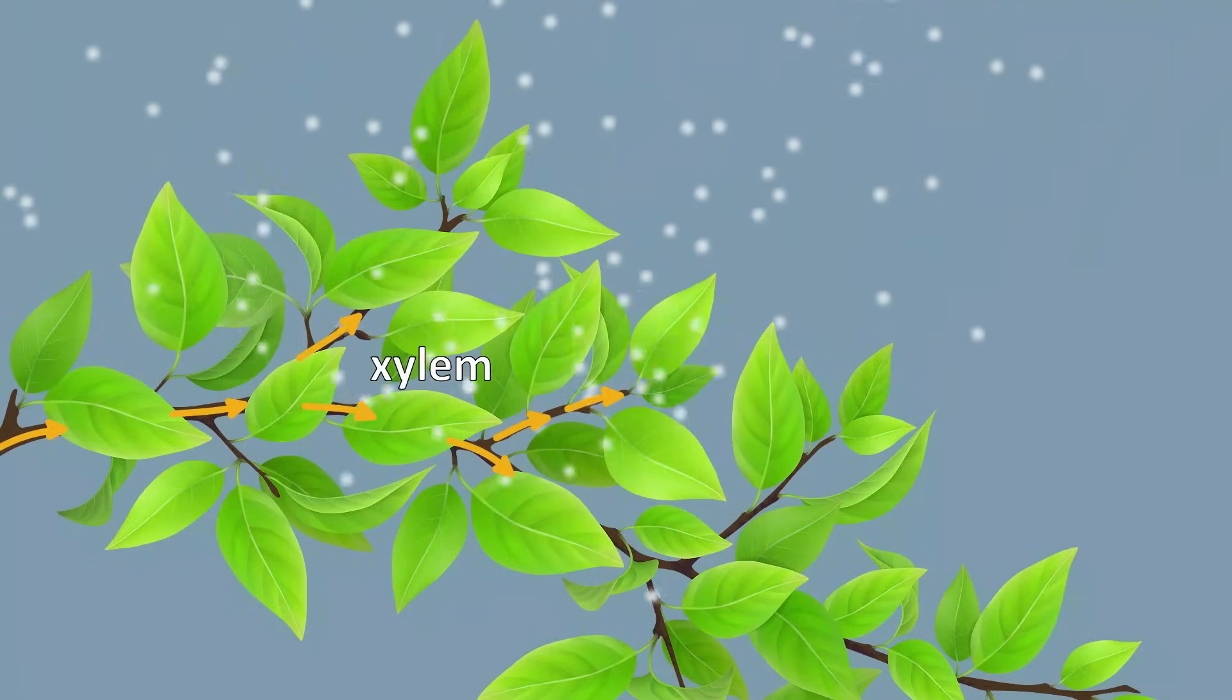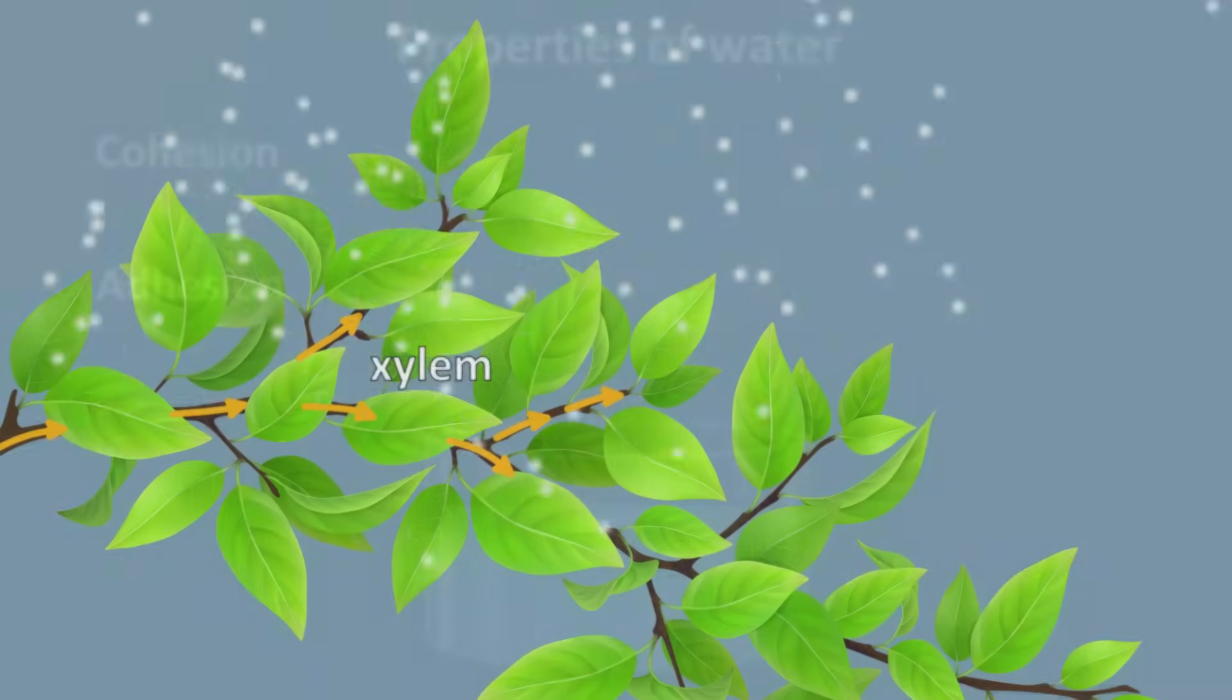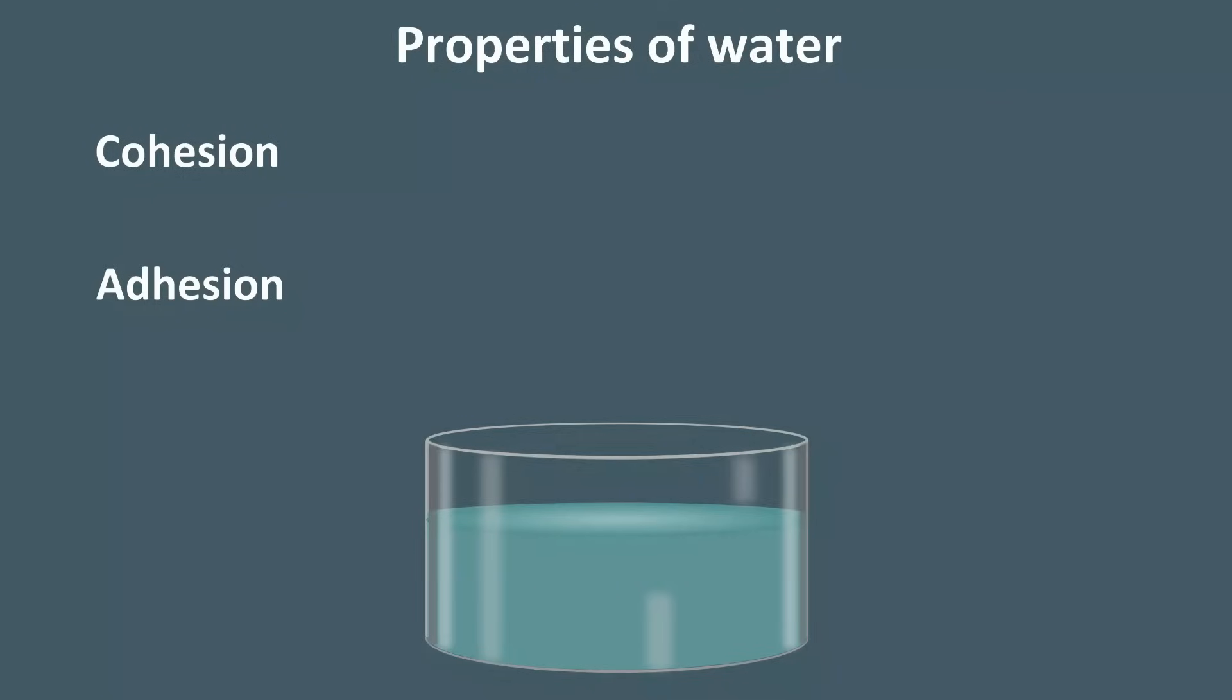But to get a deeper understanding of how trees transport water, we have to look at the properties of water itself, namely water cohesion and water adhesion.